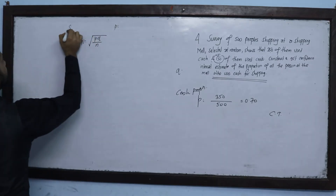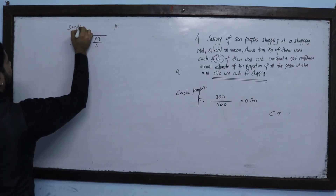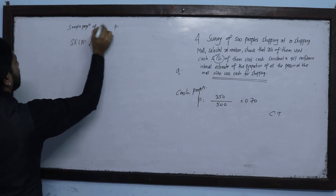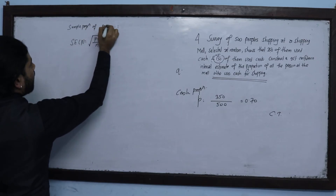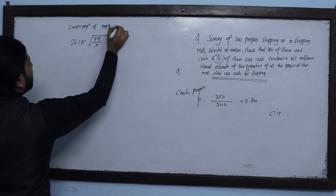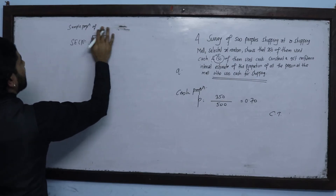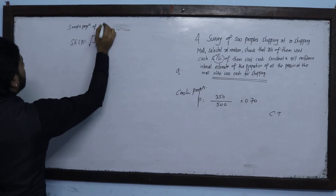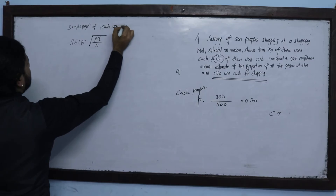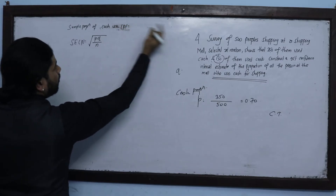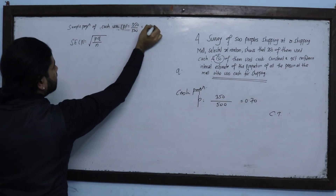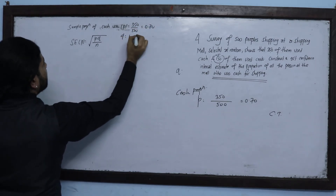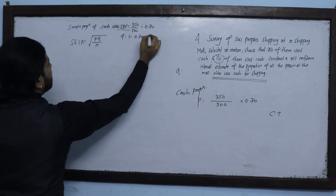Sample proportion of cash users: p̂ = 350/500 = 0.70. Q equals 1 minus 0.70, which gives Q = 0.30.